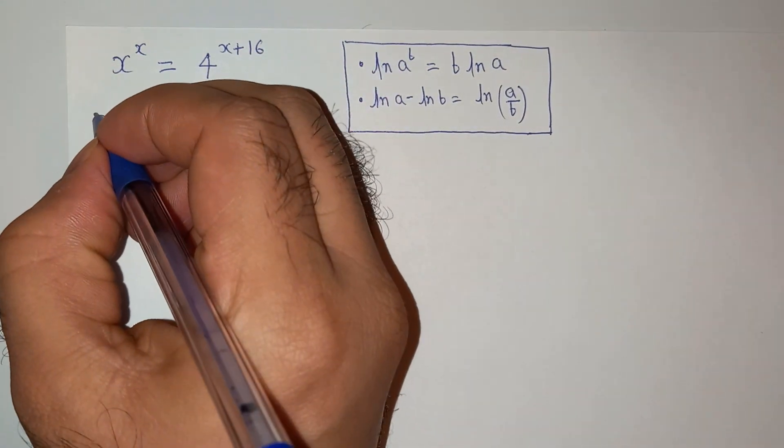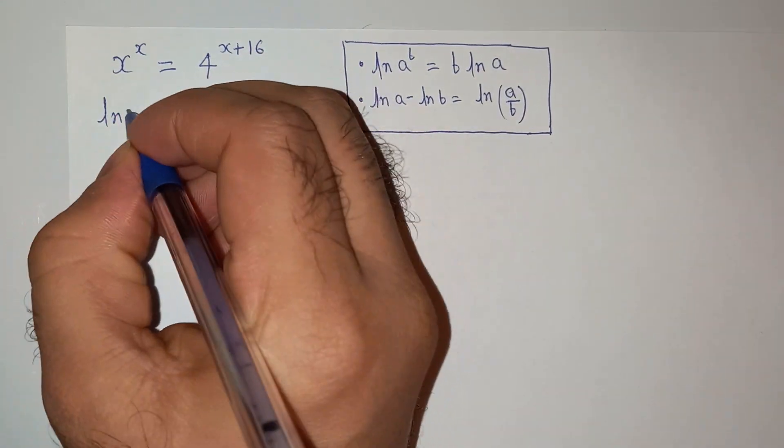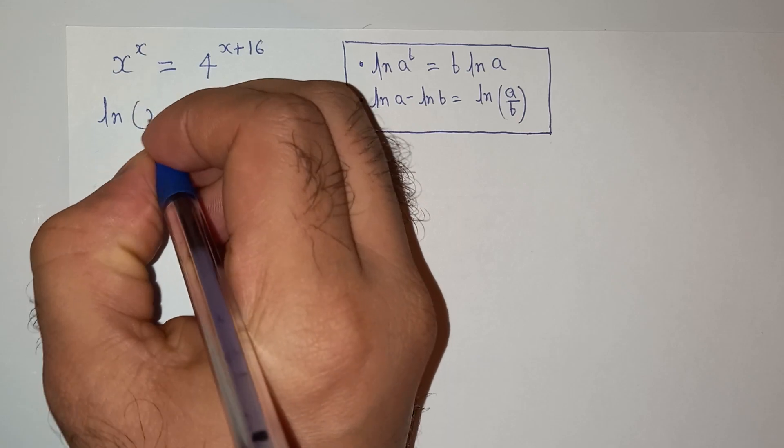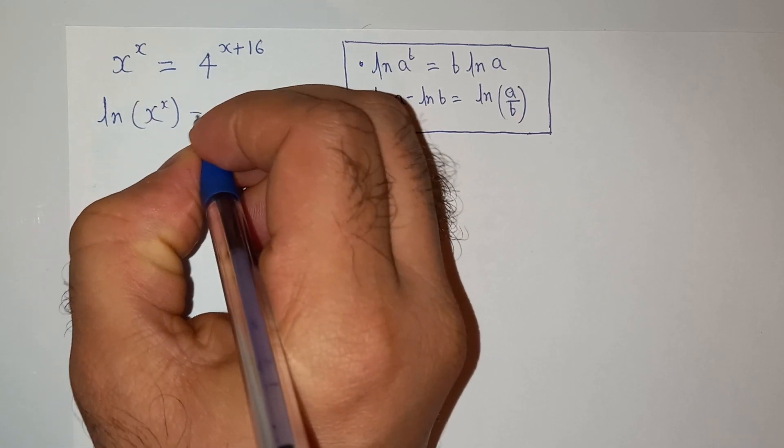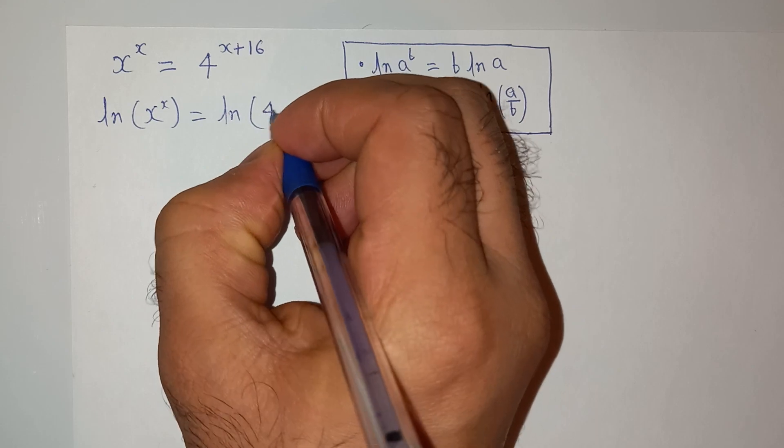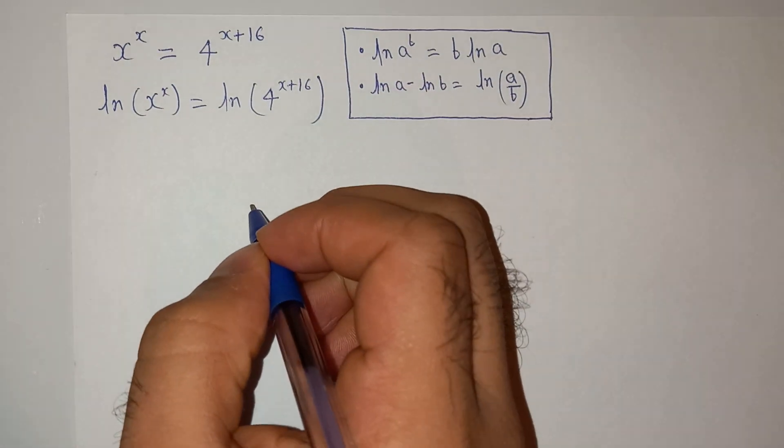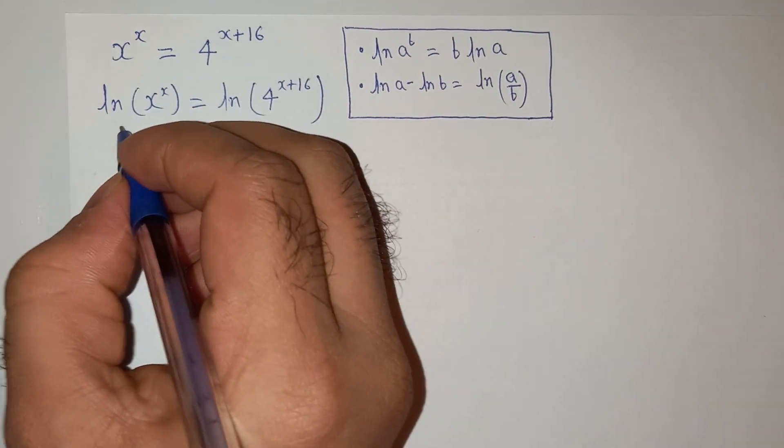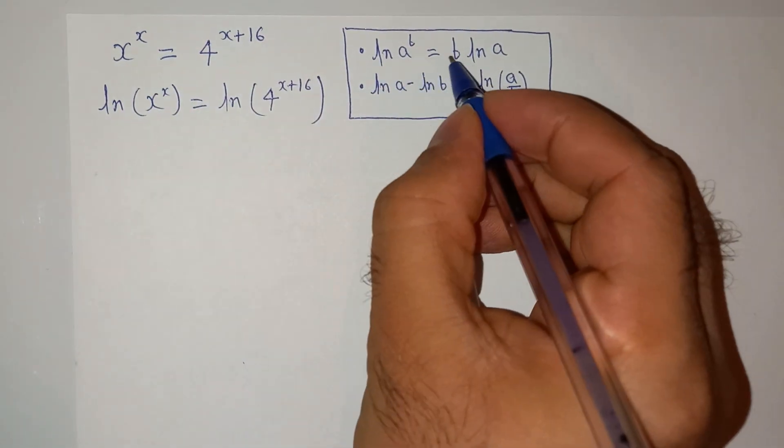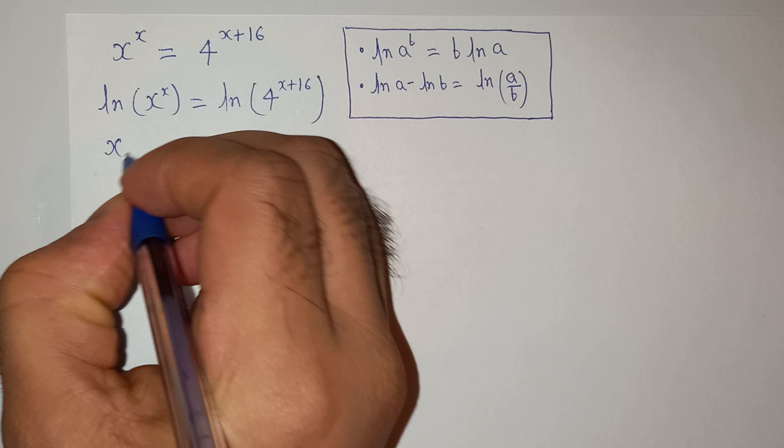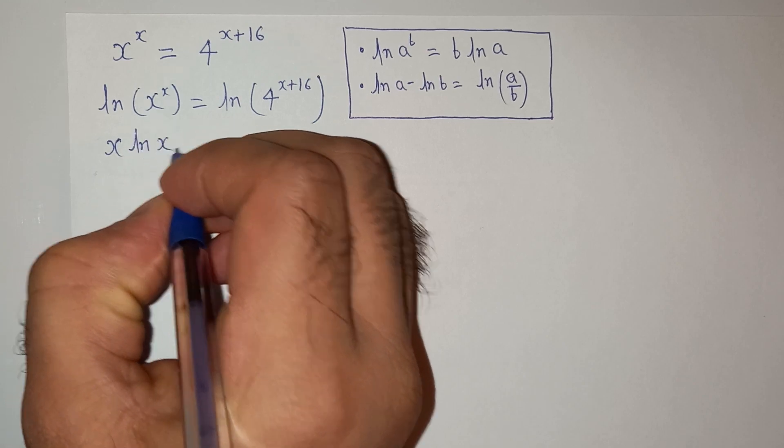So we are going to use natural logarithm on both sides. Log x power x equals to log 4 power x plus 16. So this will be as per this rule: x log x equals to x plus 16 log 4.